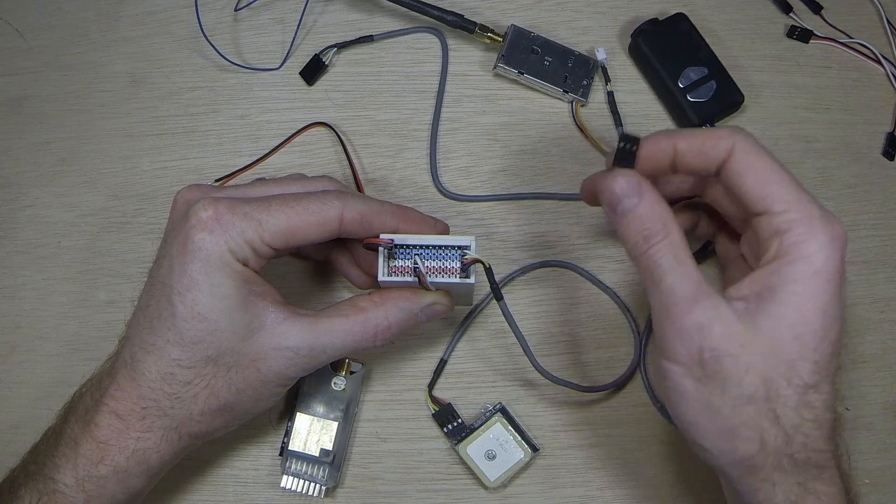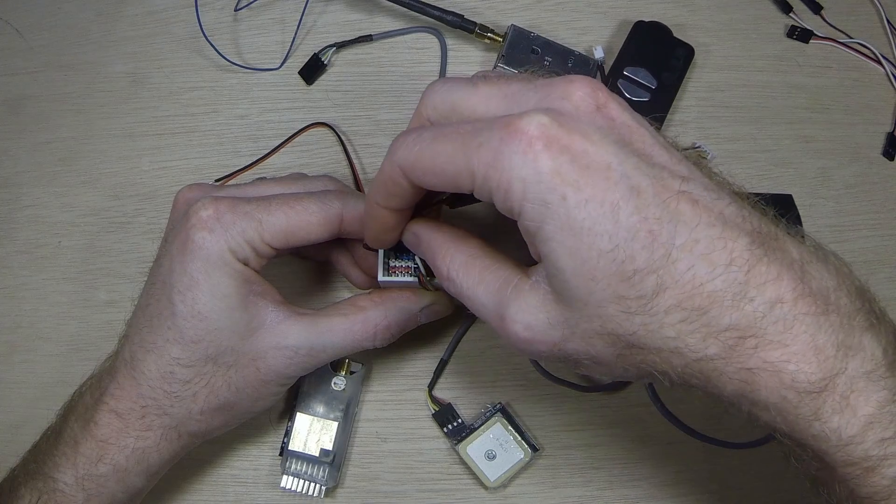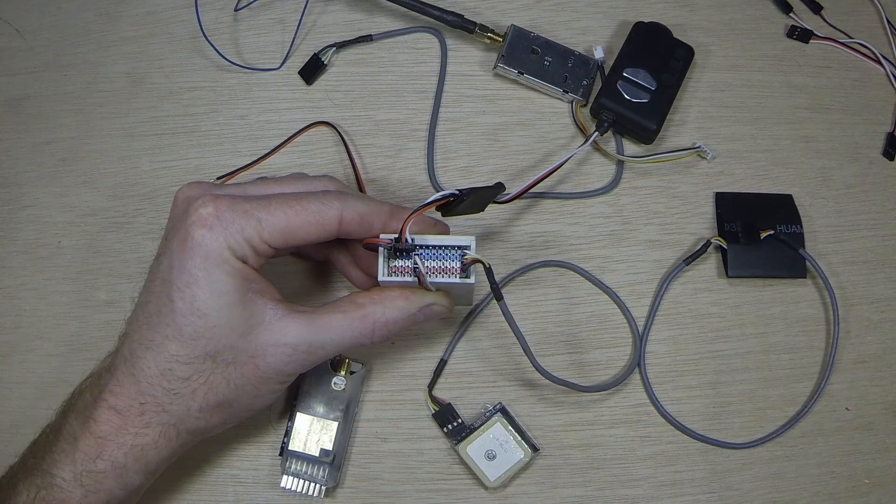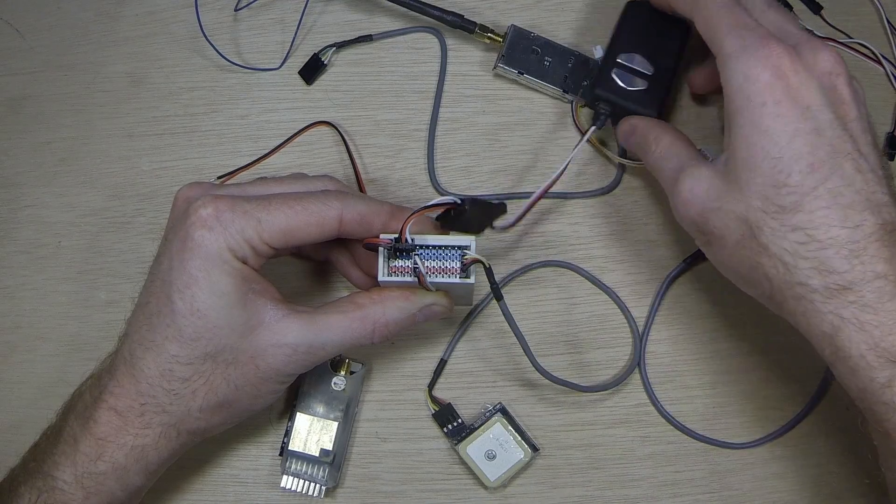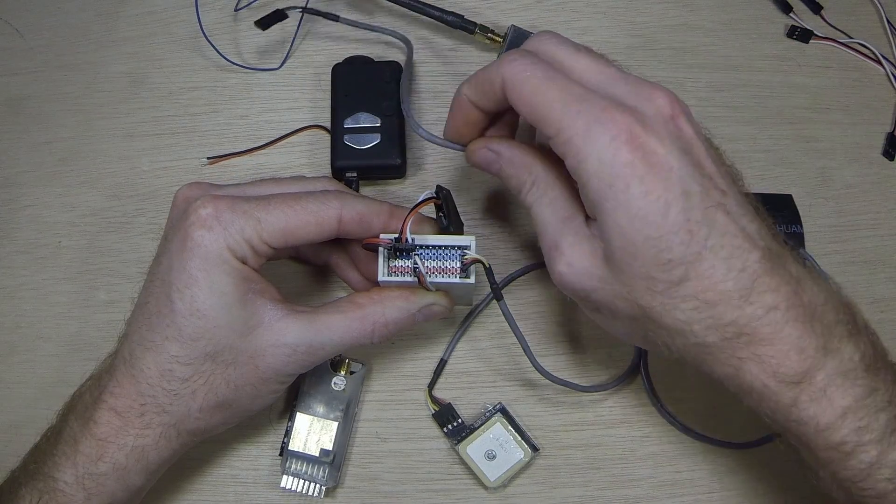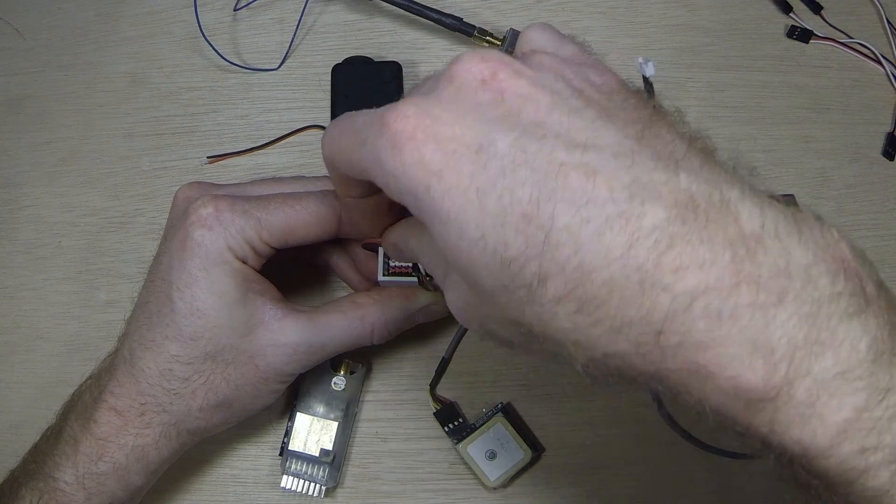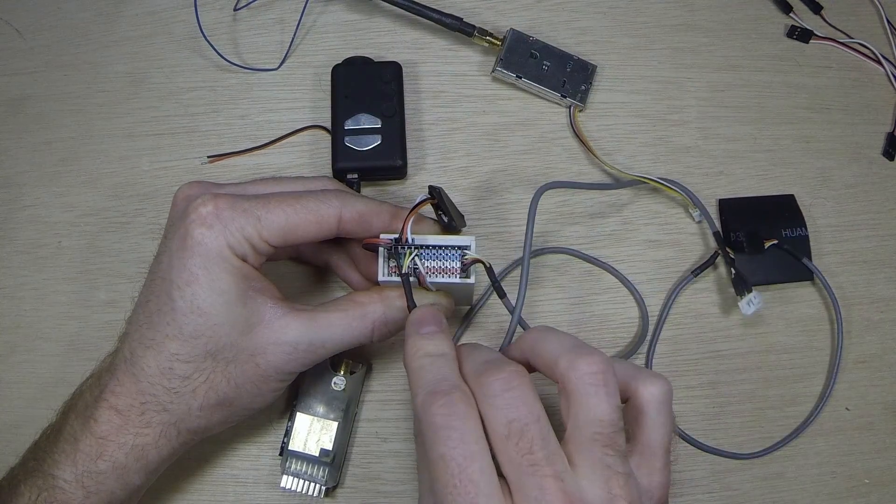The next connection is going to be for your camera, which your ground is going to be oriented towards your 12 volt wire. After that, we will connect the transmitter cable, which is oriented the same as the camera cable. So, there's both of those.